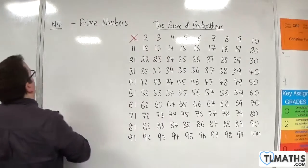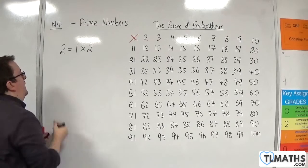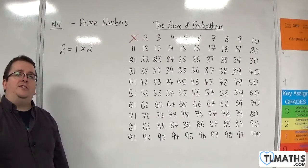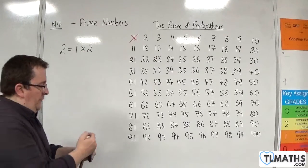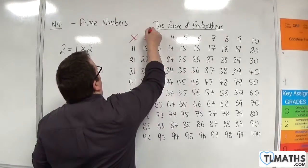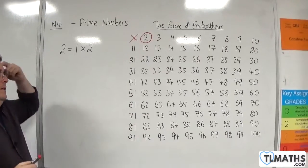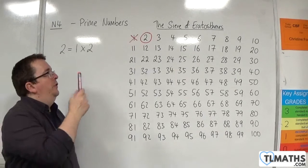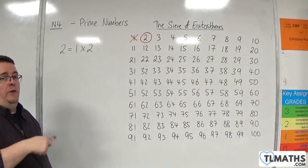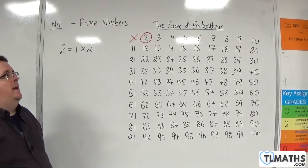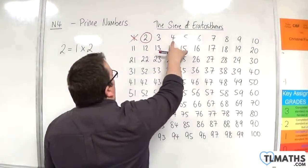Two can be written as one times two only with integers and so it has precisely two factors one and two so two is a prime number. We can have that one. Now because every even number from there on must have two as a factor it cannot be prime.